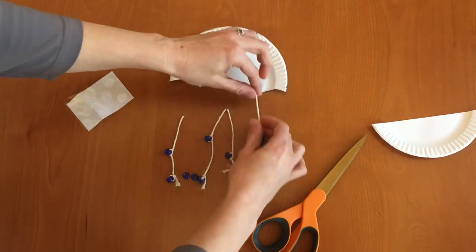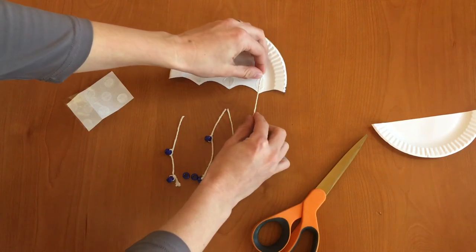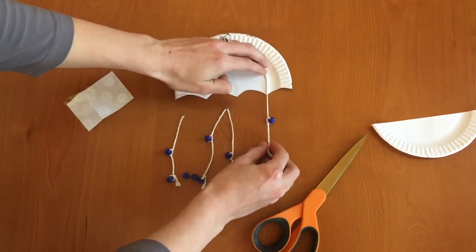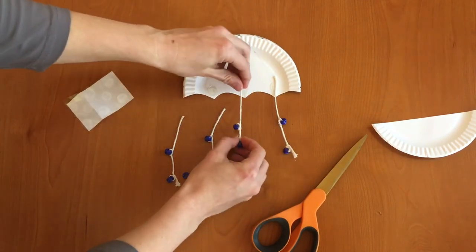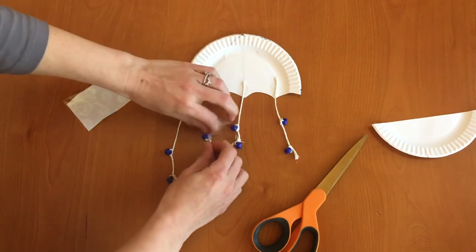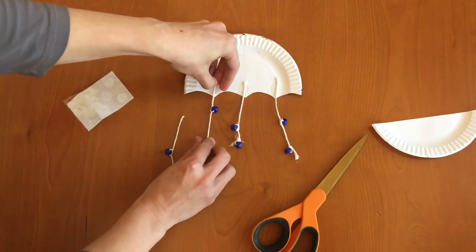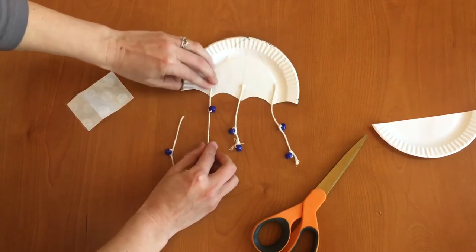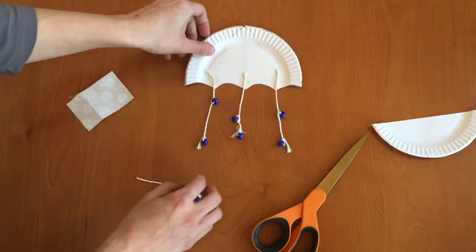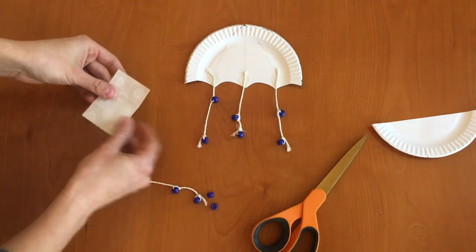And now we're just going to take our strands of string with beads on them and glue it to the back. Press it to the glue dots. And I only have three points so I'm only using three of my strands of beads. So this fourth one was just extra. And now we're not done with the back yet.